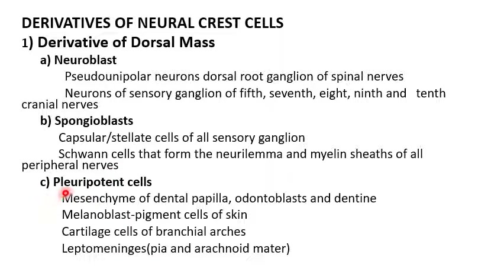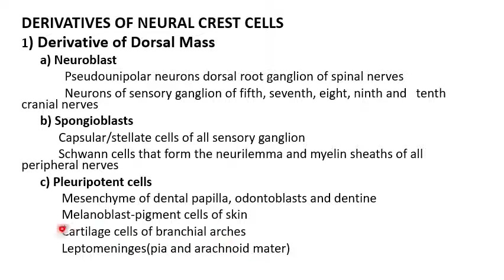The pluripotent cells form the mesenchyme of the dental papilla, odontoblasts, and dental structures. Melanoblasts form the pigment cells of the skin. Cartilage cells of the branchial arches also form from pluripotent cells, as do the leptomeninges — that is, the pia mater and arachnoid mater.